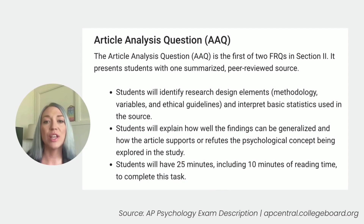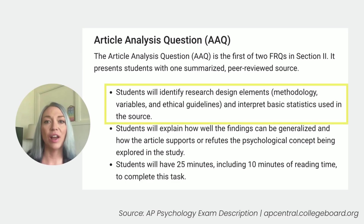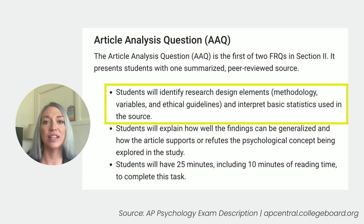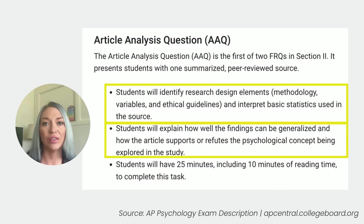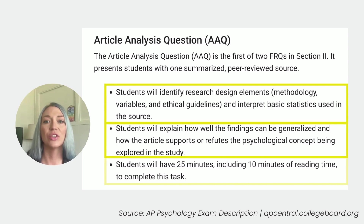In this section, students are presented with a summarized, peer-reviewed research article and are required to identify research design elements, methodology, variables, and ethical guidelines, and interpret basic statistics used in the source, and explain how well the findings can be generalized and how the article supports or refutes the psychological concept being explored in the study. Students will have 25 minutes, including 10 minutes of reading time, to complete this task.